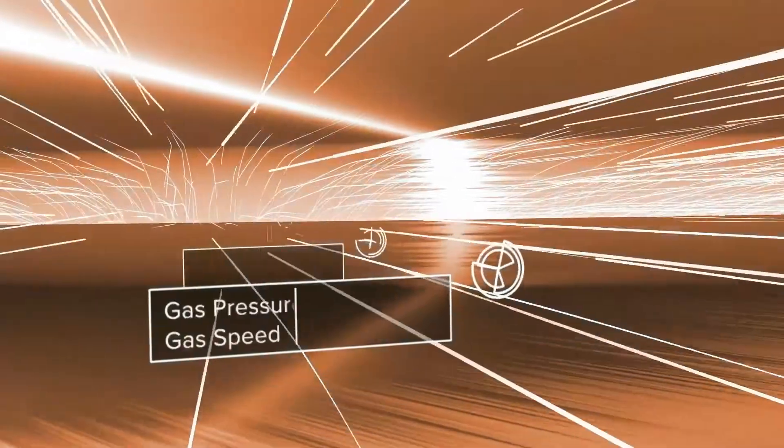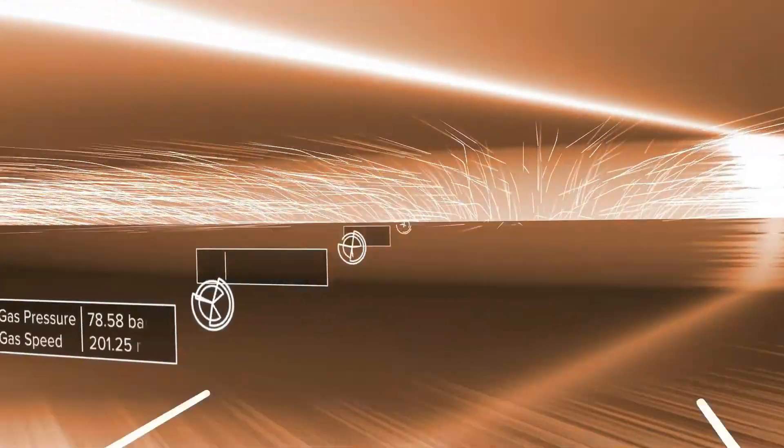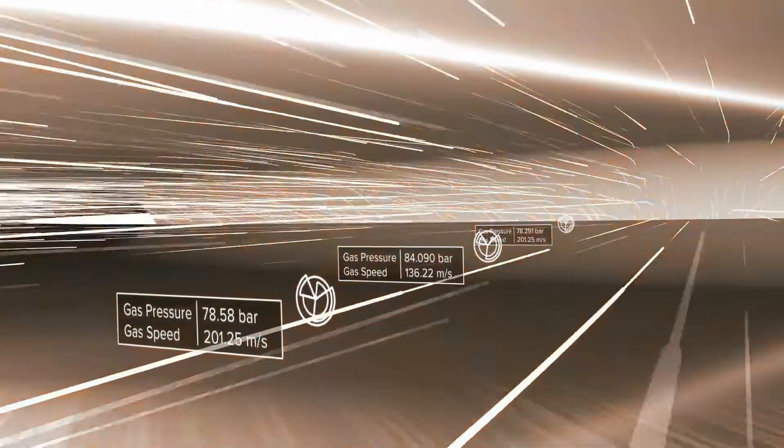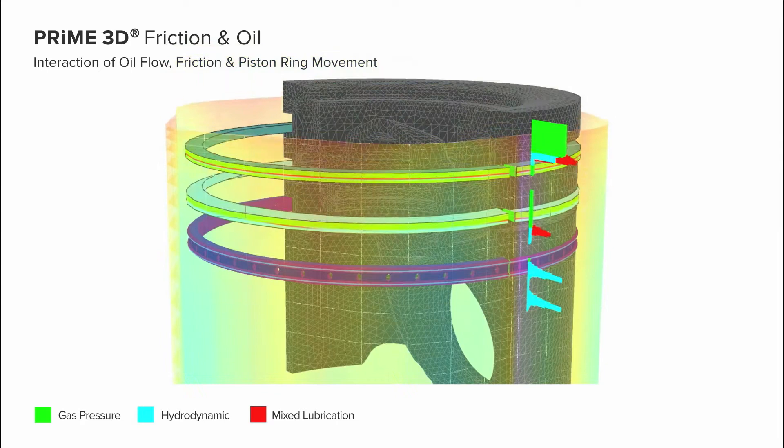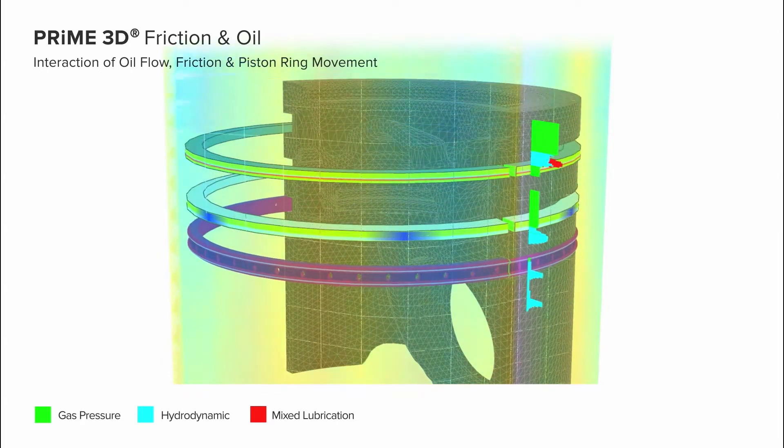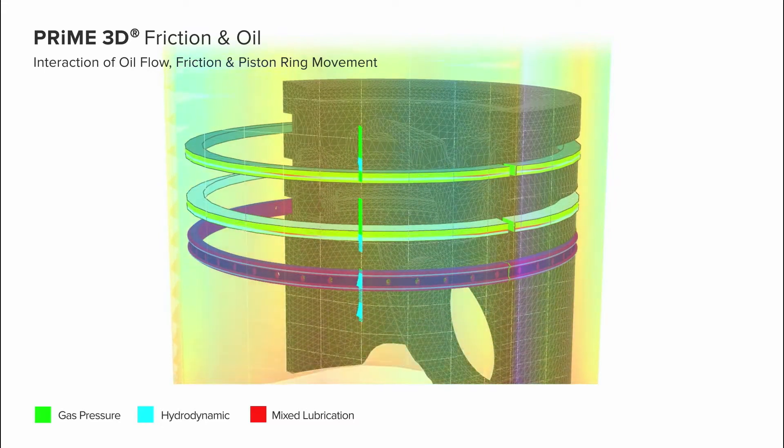Prime 3D also has the capability to determine pressure gradients, heat exchange, and gas velocity in the flow channels. This is important, as the amount of gas pressure is decisively responsible for the reaction forces, twist, and arch of the piston rings.